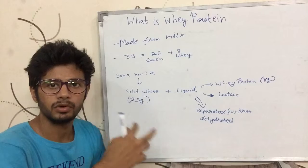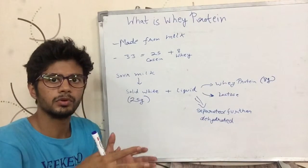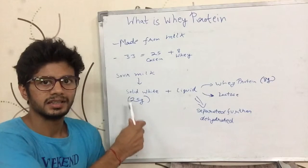That is how whey protein powder is made and that is what whey protein is. It is a component protein of milk while the other protein in the milk is casein protein.